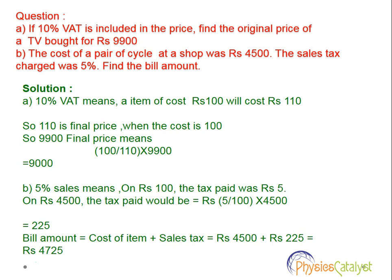Solution two: 5% sales tax means on rupees 100, the tax paid would be rupees 5. So on rupees 4500, the tax paid would be 5 divided by 100 into 4500, which equals rupees 225. Total bill amount equals cost of item plus sales tax, that is 4500 plus 225, which equals rupees 4725. We have seen that using percentage formulas and the unitary method, we can easily solve value-added tax and sales tax problems.